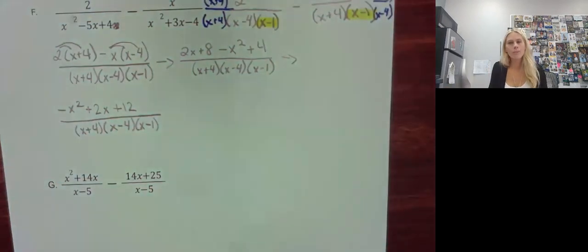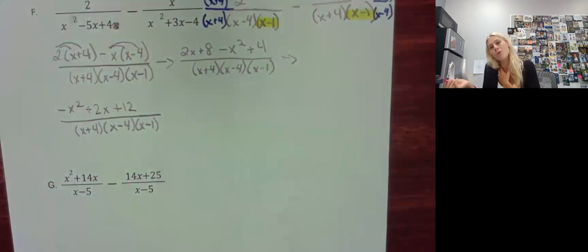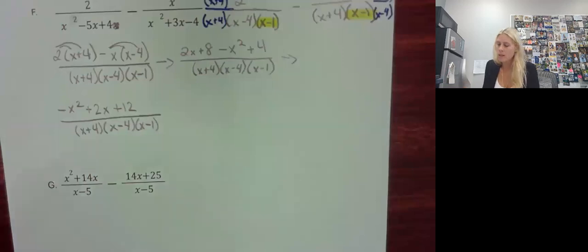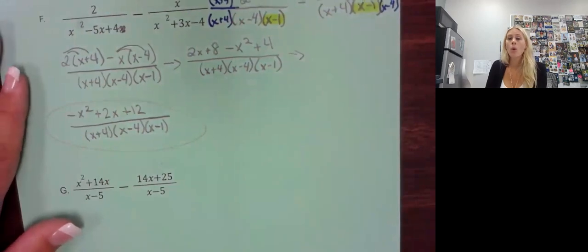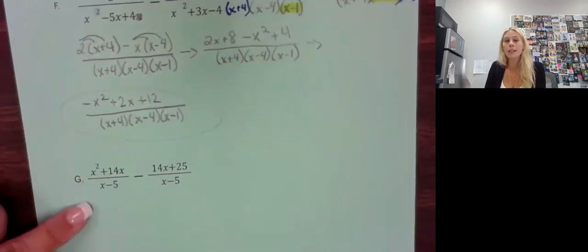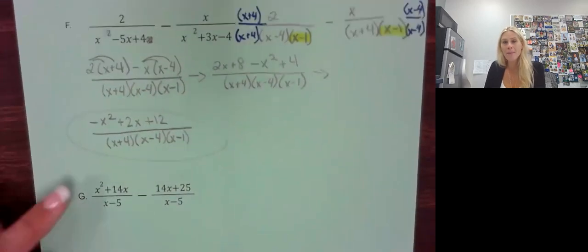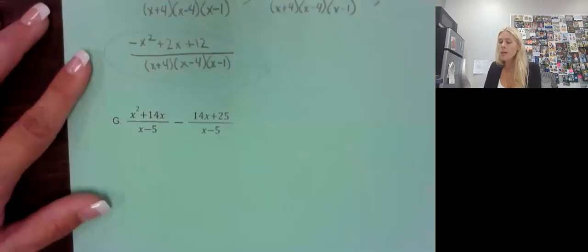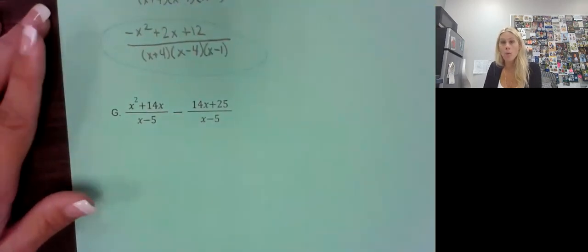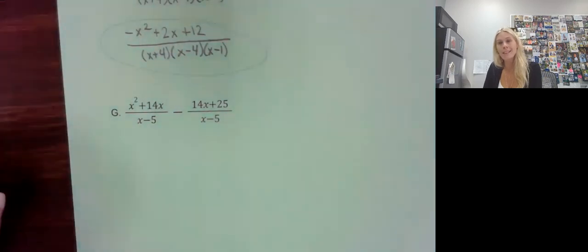We are done. The numerator cannot be factored further because there are no two numbers that multiply to give twelve but add to give two. That was a lot of work — hopefully the last one won't be as much. One more example, then you can finish your assignment using these notes.